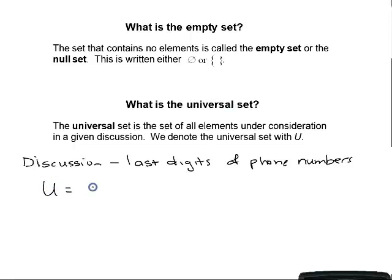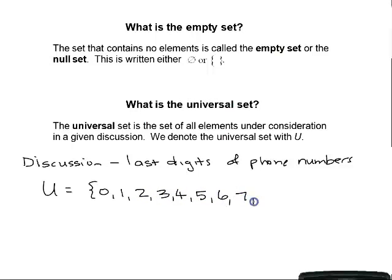The universal set — the list of all possible last digits of phone numbers — would be 0, 1, 2, 3, 4, 5, 6, 7, 8, 9. Those are all of the possibilities for the last digit of a phone number.